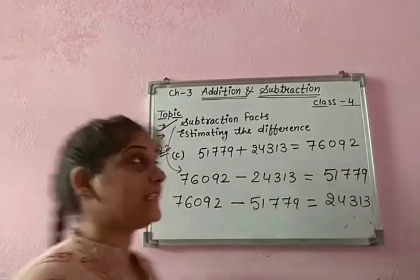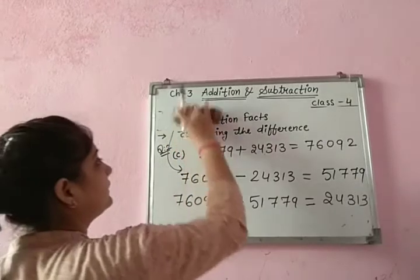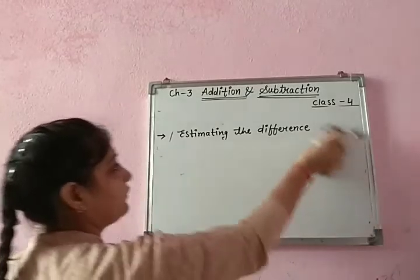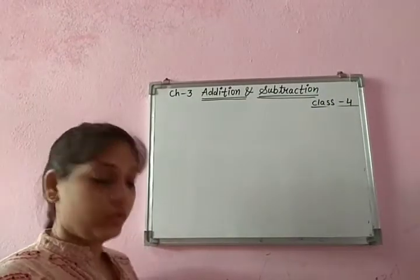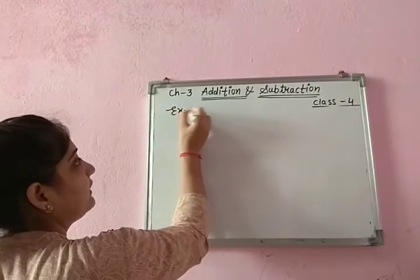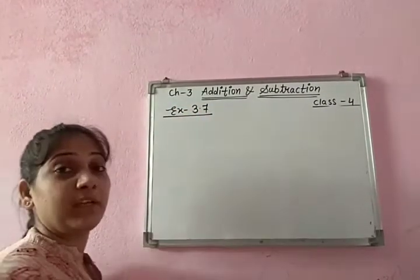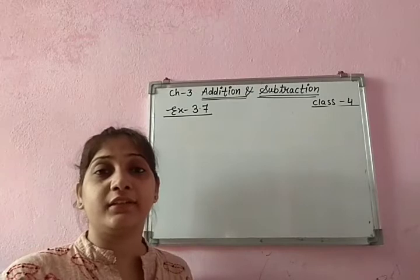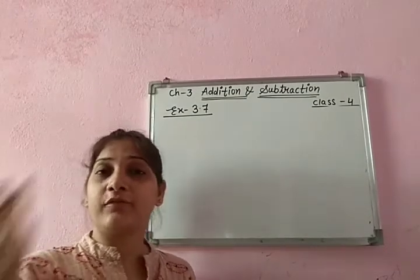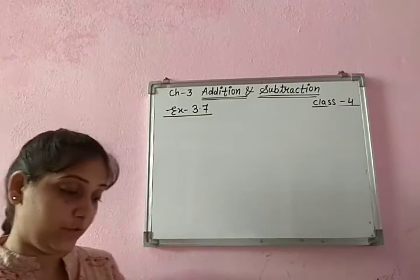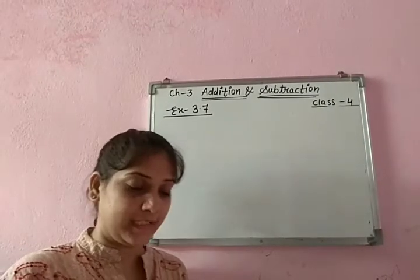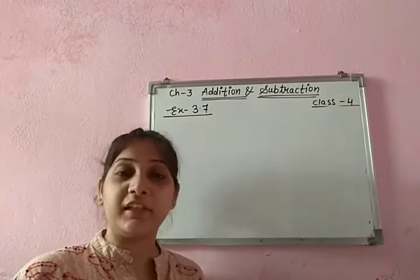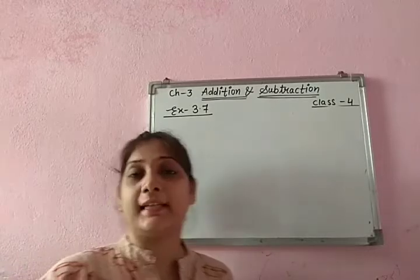Now the second topic is estimating the difference. We had already learned how to estimate a number — how to find nearest 10, nearest 100, nearest 1000. Exercise 3.7 is based on this topic. Whatever question is given, it states whether we need nearest 10, 100, or 1000. According to that, we find the actual difference and then the estimated difference. The first question says: find the actual as well as estimated difference by rounding to nearest 100.